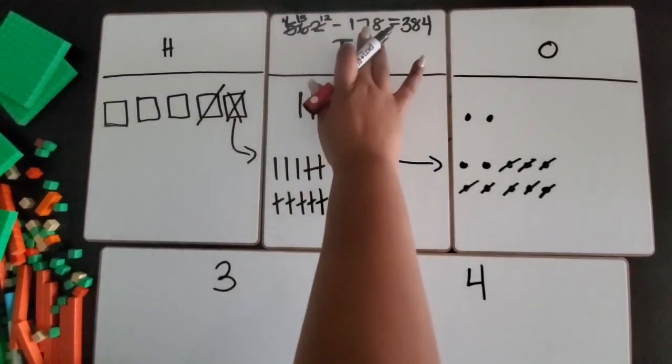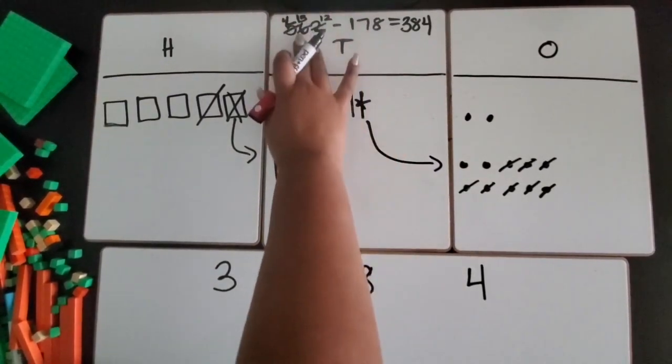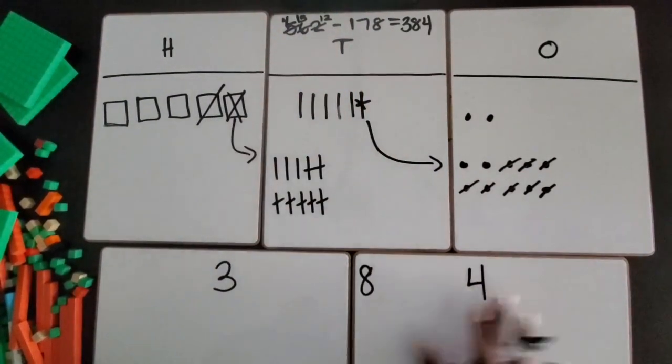So we subtracted one three-digit number from another three-digit number using a quick picture of base 10 blocks.